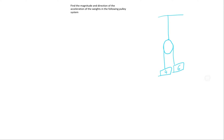We will draw the free body diagram for this system. On the 4kg weight, there will be a net force acting down of 4g and the tension acting up equals to T. The 6kg weight will similarly be the same. Because it's a single pulley system,